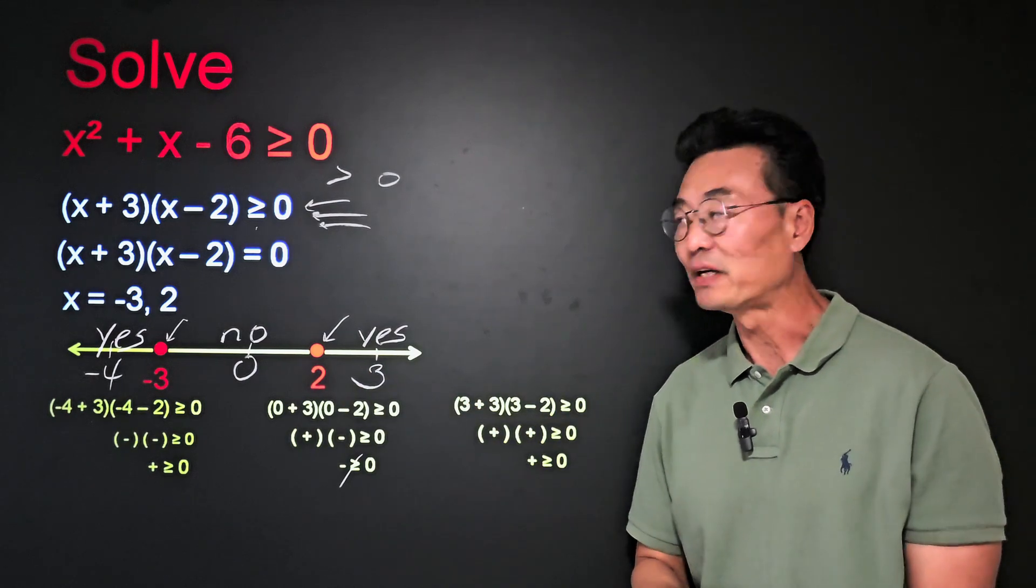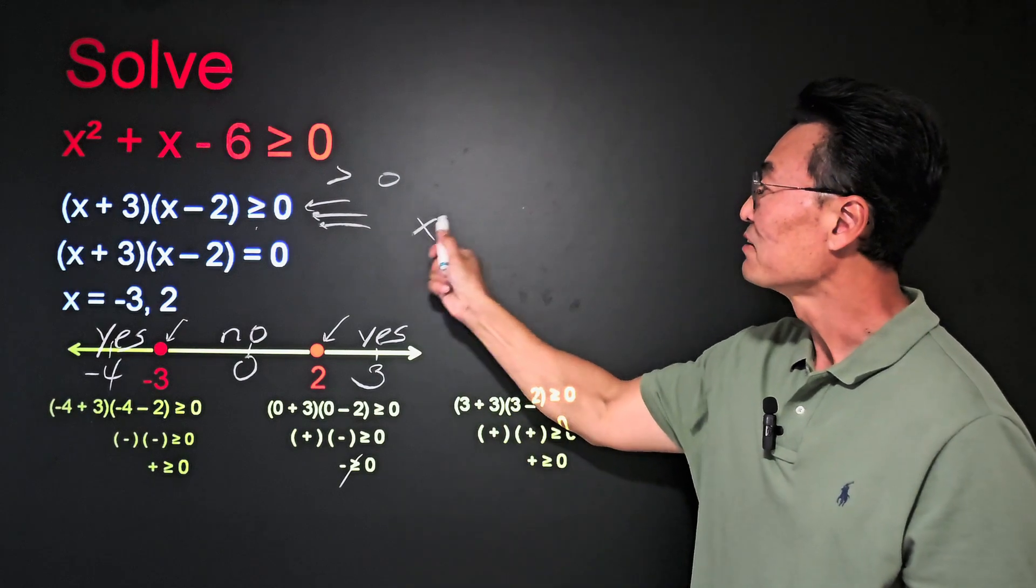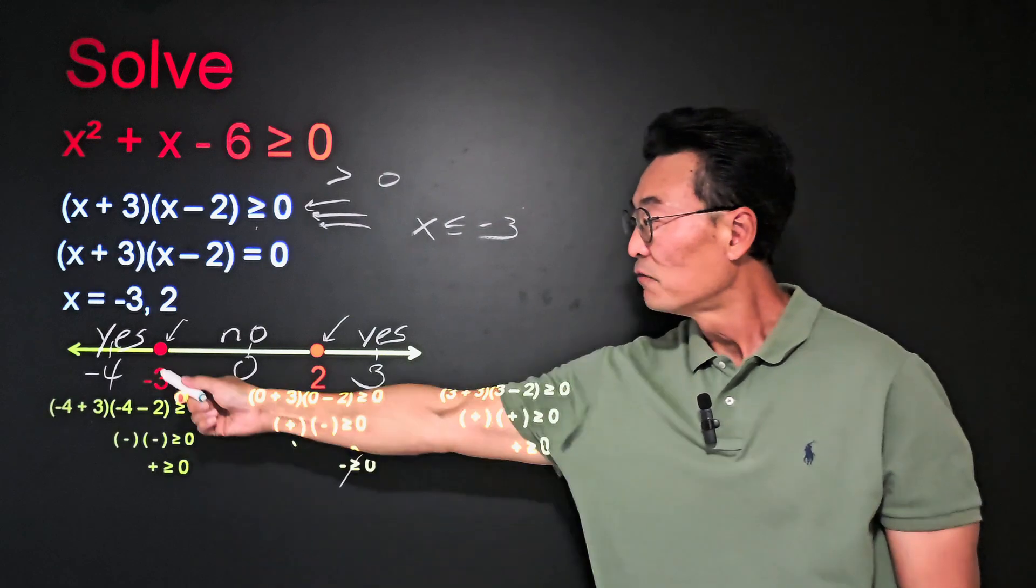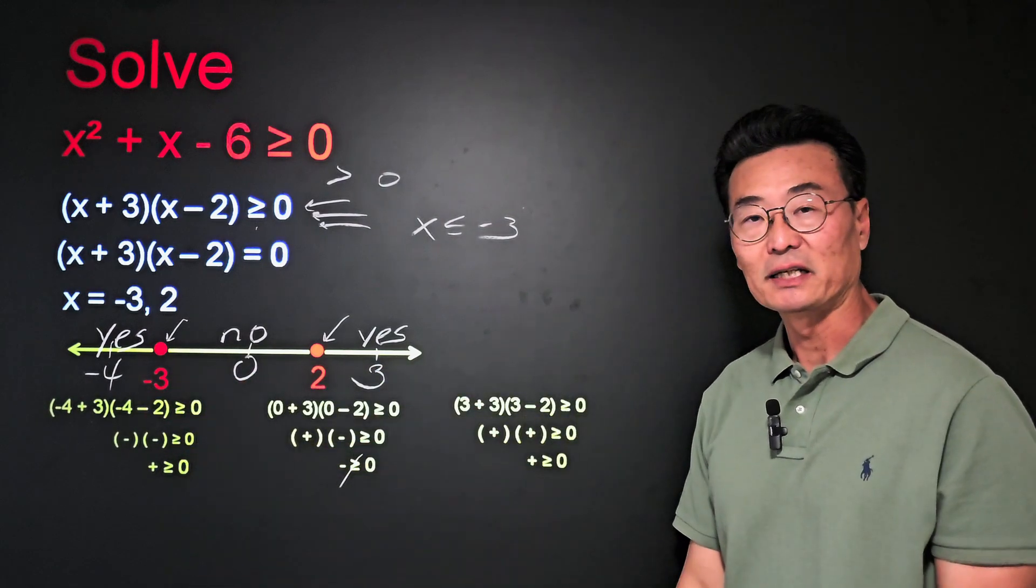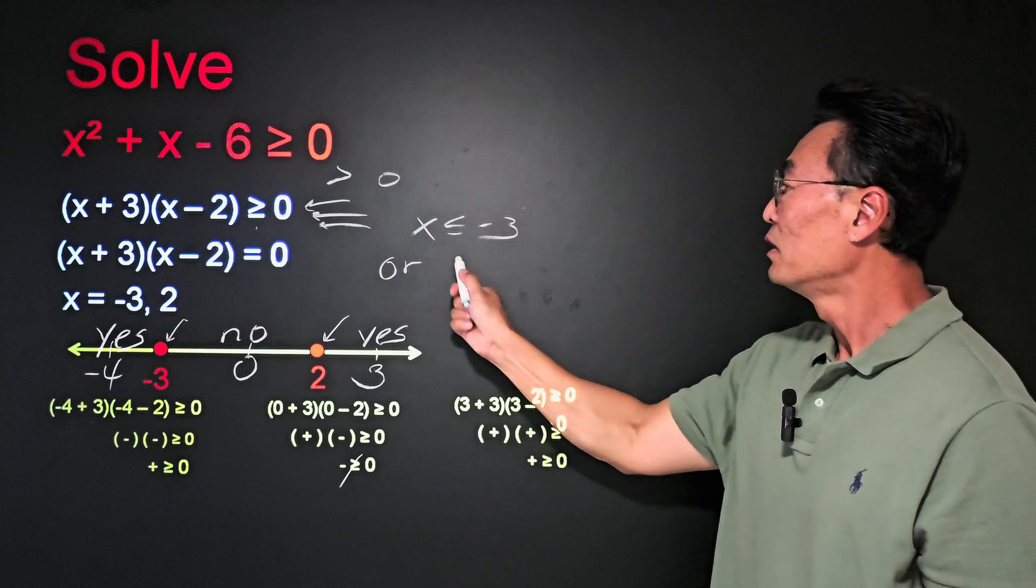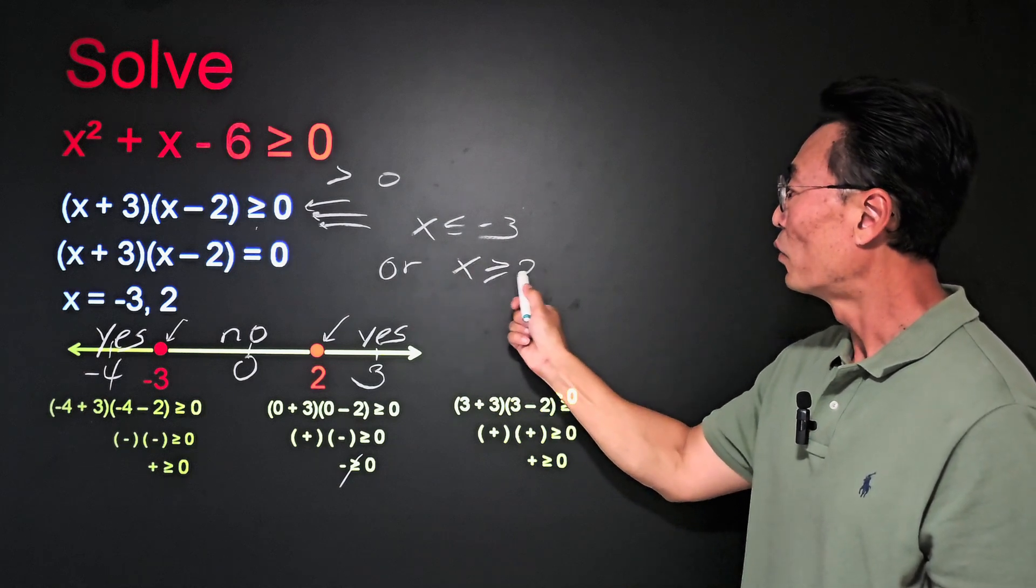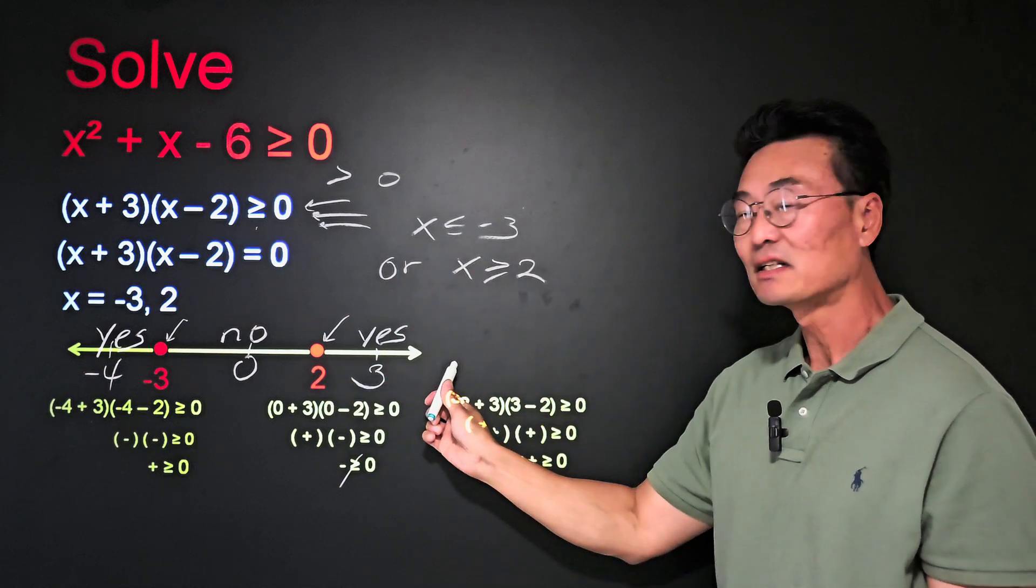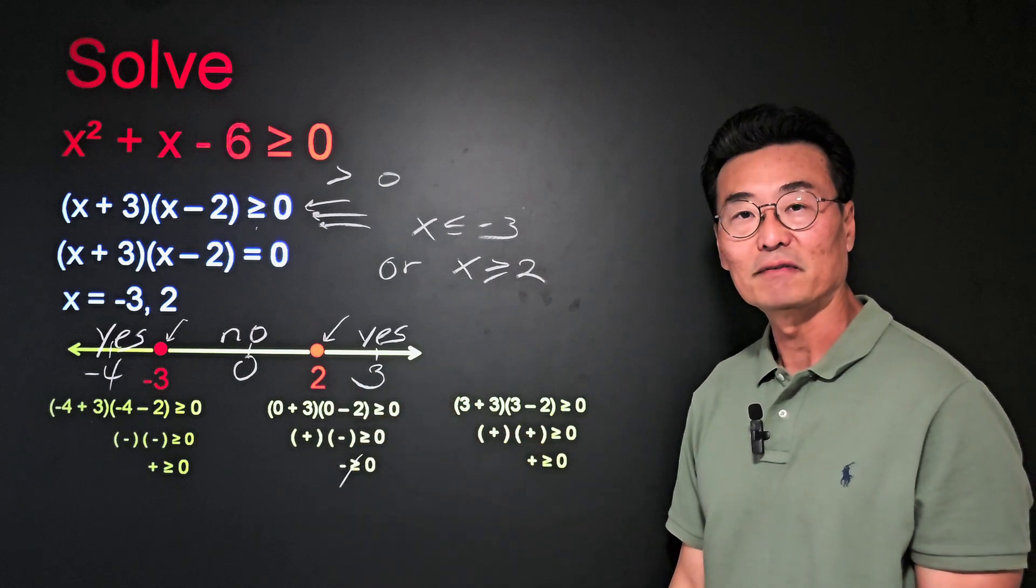Then here's our final answer. It's going to be where x is less than or equal negative 3, for the left side, and including negative 3, or x is greater than or equal 2 on the right side of the 2, and including the value of 2.